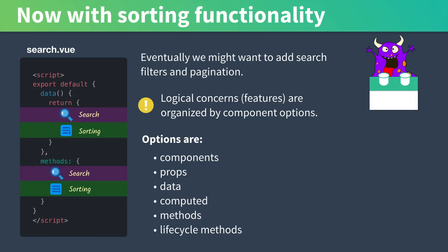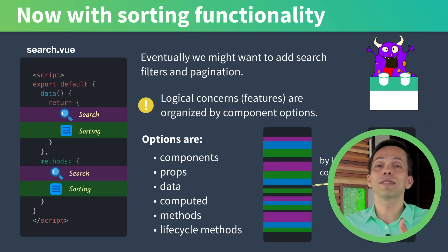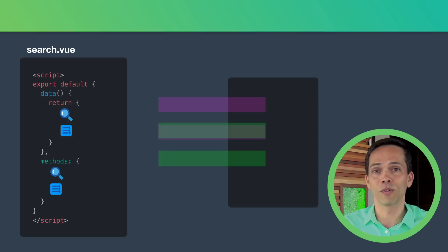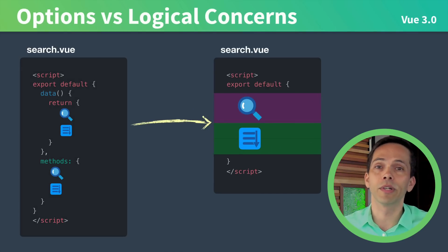If you think about a more complex component, having our code split up in multiple places just isn't as nice as having it all organized together, which makes our component more readable and maintainable. Even in our simple example it'd be nice if our search code and our sort code were kept together, and Vue 3 makes this possible. Using the Composition API we can keep our components more readable.